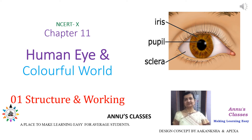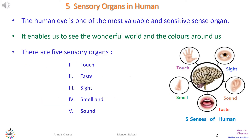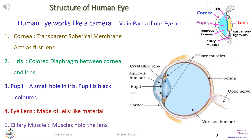Hello students, today we are starting a new chapter for Class 10: Human Eye and Colorful World. In this video we will learn about the structure and working of the eye. There are five sensory organs in a human being: touch, taste, sight, smell, and sound. The human eye is the most valuable and sensitive sense organ — it enables us to see the wonderful world and the colors around us. Human eye works like a camera.